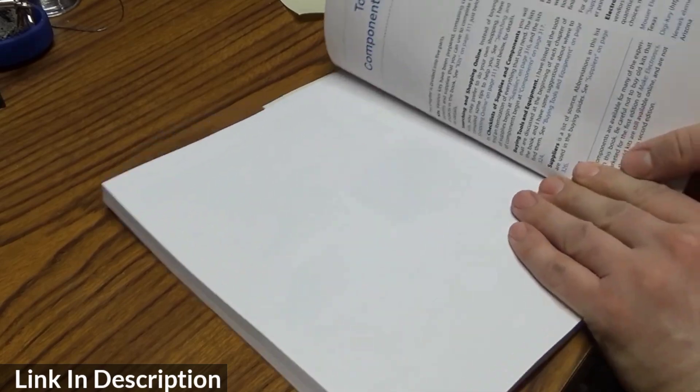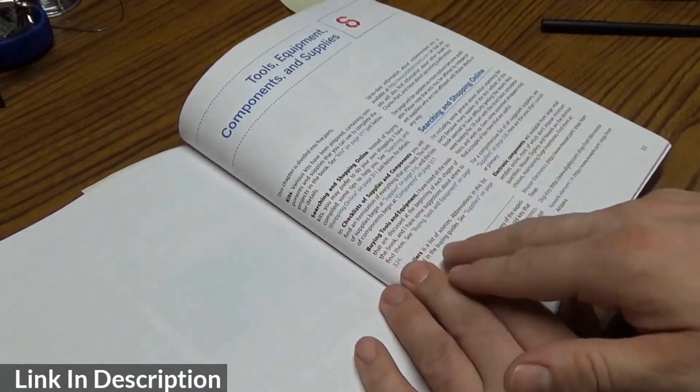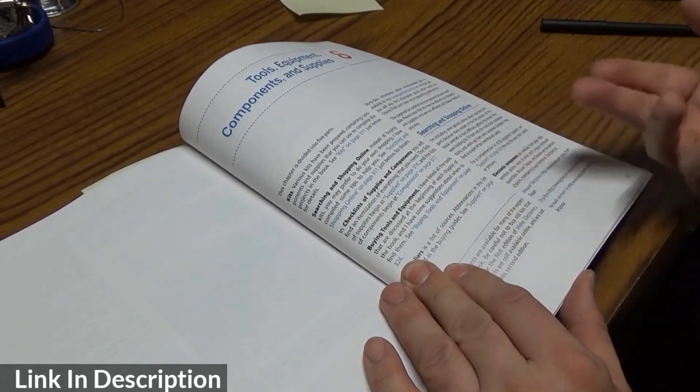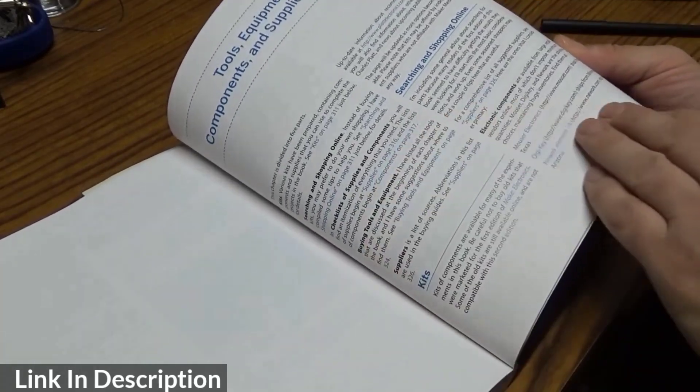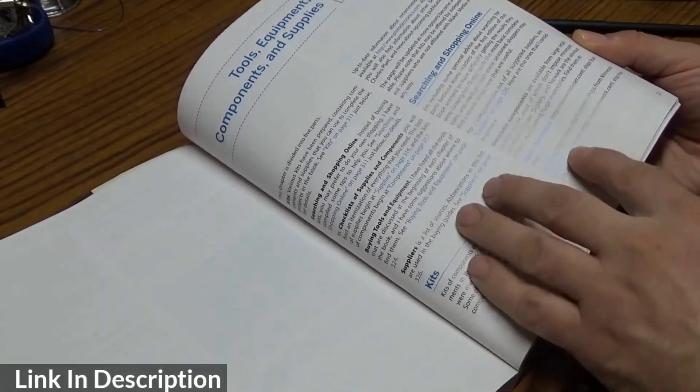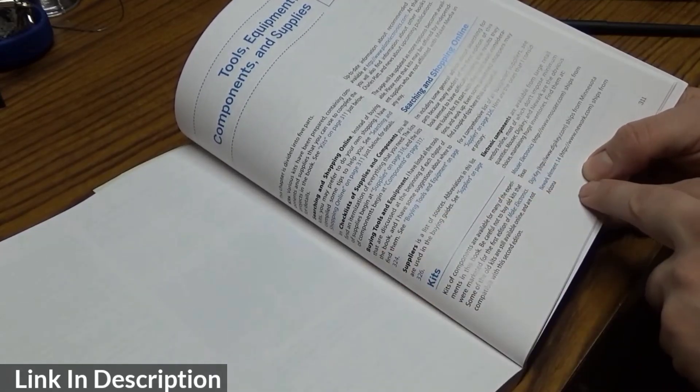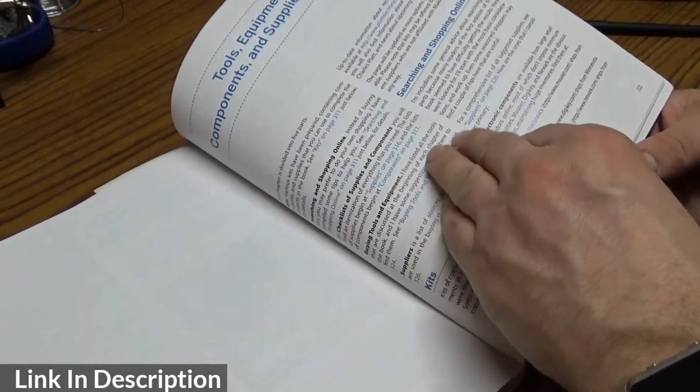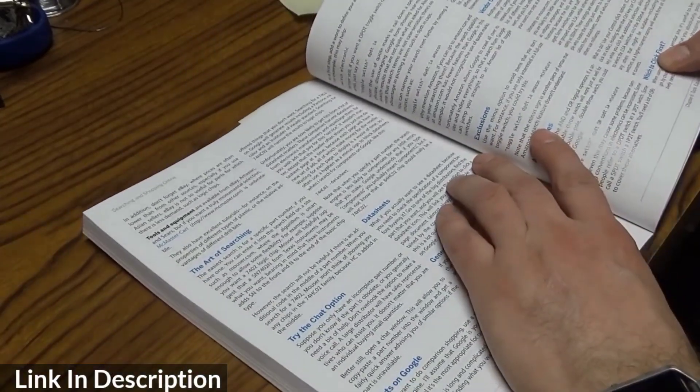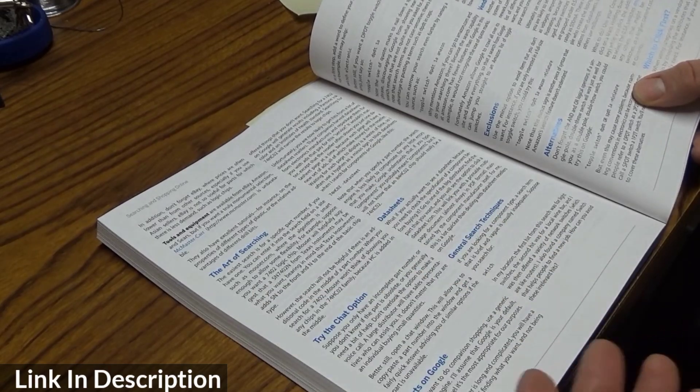Then one of the appendices here gives you tips on shopping online for components, what sort of tools you should be looking for, and how to search. They list online sites you should be getting your electronics from like Mouser, DigiKey, Newark Element 14.